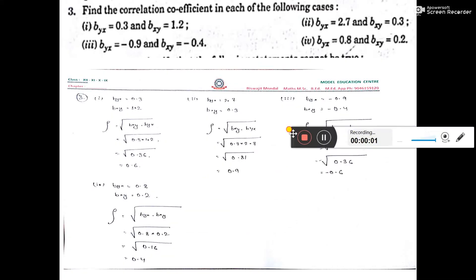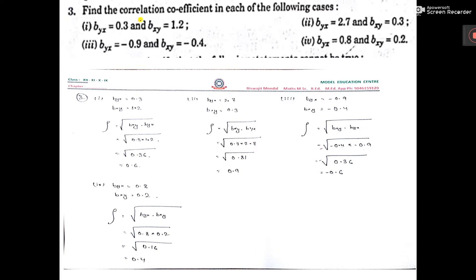In this question, find the correlation coefficient in each of the following cases. byx, bxy given. We have to find rho. See here, given. Now rho formula you know, bxy to byx. Put the value, this is the answer.